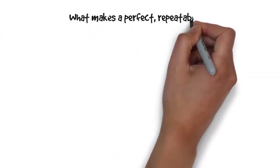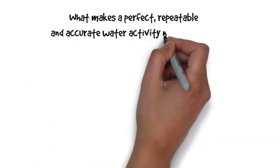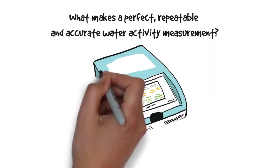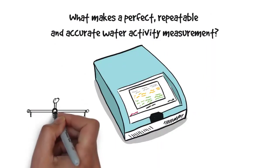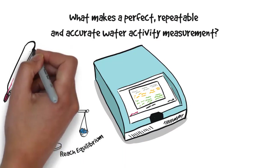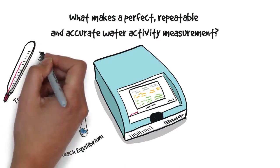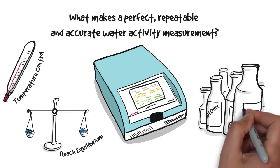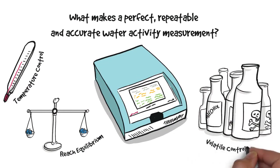What makes a perfect, repeatable, and accurate water activity measurement? In measuring water activity, wait until the sample has reached stability. Measure at a consistent temperature so that you can compare values. Neutralize the influence of volatiles which can skew your results.